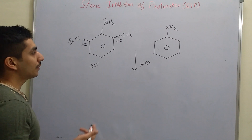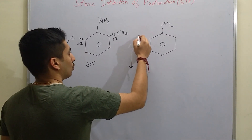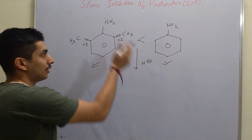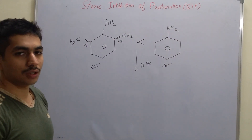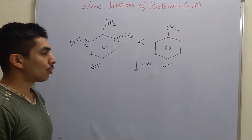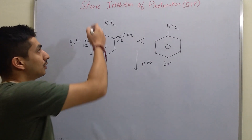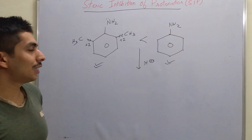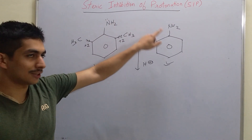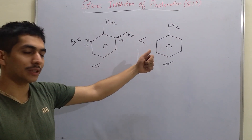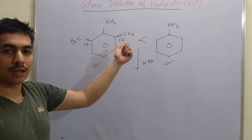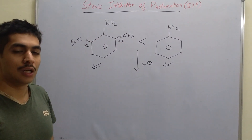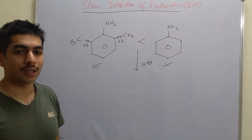But in reality, aniline is more basic. The protonation for aniline will be faster than for dimethylaniline. And the reason for that is this concept — Steric Inhibition of Protonation. This explains why aniline is more basic than dimethylaniline even though the two methyl groups have +I effect which are increasing the electron density on the nitrogen.